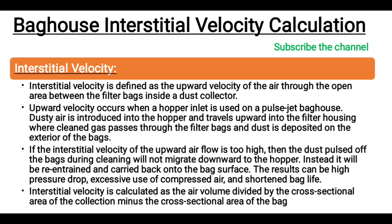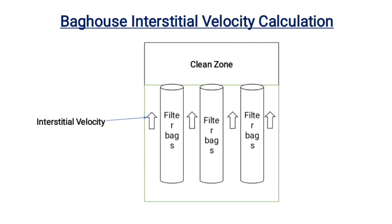How to calculate the interstitial velocity? Interstitial velocity is calculated as the air volume divided by the cross-sectional area of the collection minus the cross-sectional area of the bag. The schematic diagram illustrates this: air volume divided by the cross-sectional area of the collection minus the cross-sectional area of the bag.